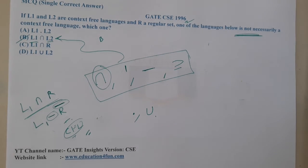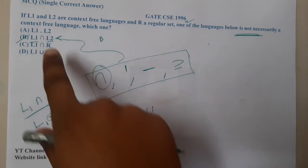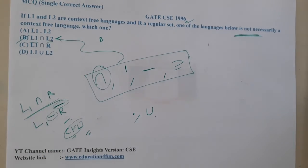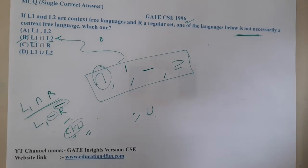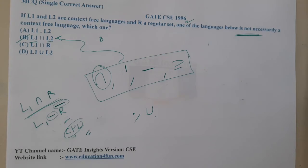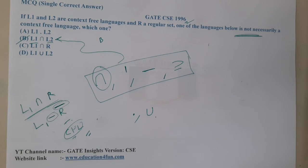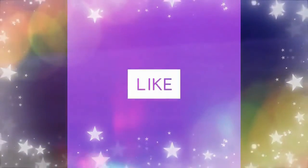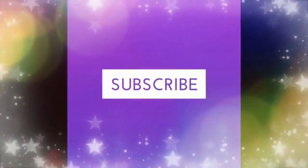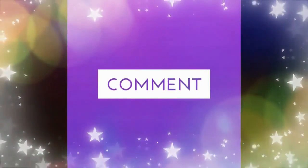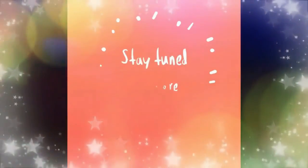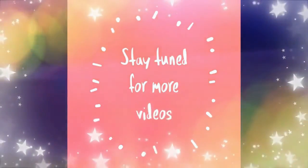I hope everyone got a clear idea that option B is 100% the wrong option, meaning it is not necessarily context-free. In the next lecture, let us continue with the next question. Thank you — like, share, and subscribe for more videos.